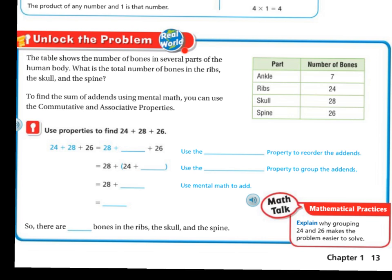All right, let's unlock the problem. The table shows the number of bones in several parts of the human body. What is the total number of bones in ribs, the skull, and the spine? To find the sum of the addends using mental math, you can use the commutative and associative properties.